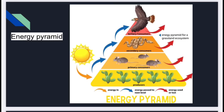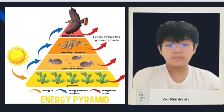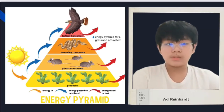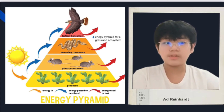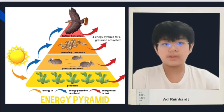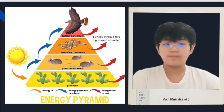Now let's move to the last part, the energy pyramid. The energy pyramid, also known as the trophic or ecological pyramid, is the graphical representation of the energy found within the trophic levels of an ecosystem.